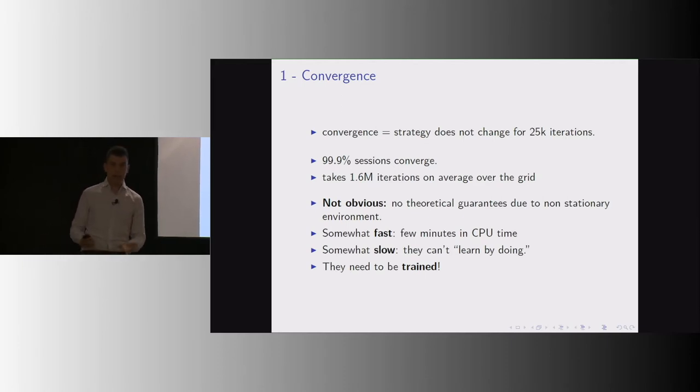The reason is that this is a highly unstationary world because there are these two Q-learning algorithms playing with each other, even though they don't know they are playing against each other. All of them converge. On average, it takes 1.6 million interactions over the grid. In CPU times, it takes minutes, not days like yesterday, so it's fairly simple.